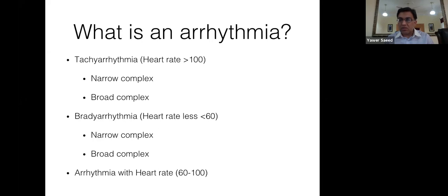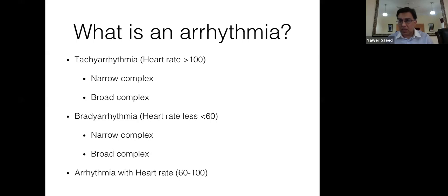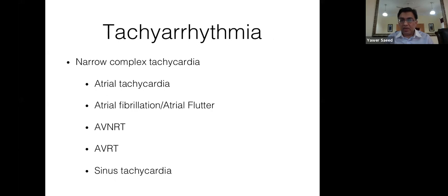The same approach applies to bradyarrhythmias — not as common as tachyarrhythmias, but if the heart rate is less than 60, determine if it's narrow or broad complex. Remember: whenever there is a broad QRS complex on the ECG in any arrhythmia, you have to act quickly and cannot wait.